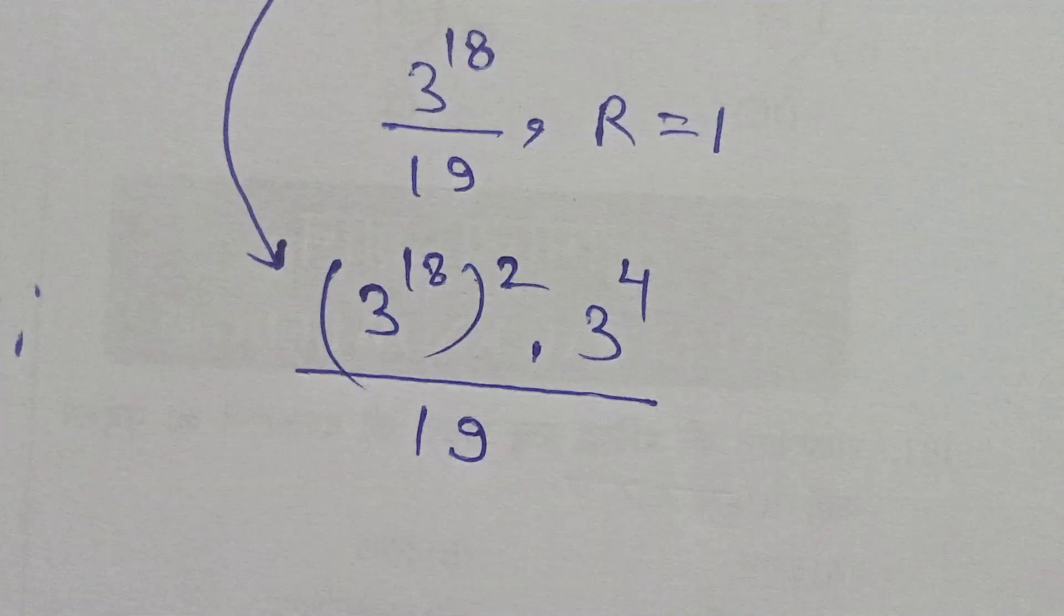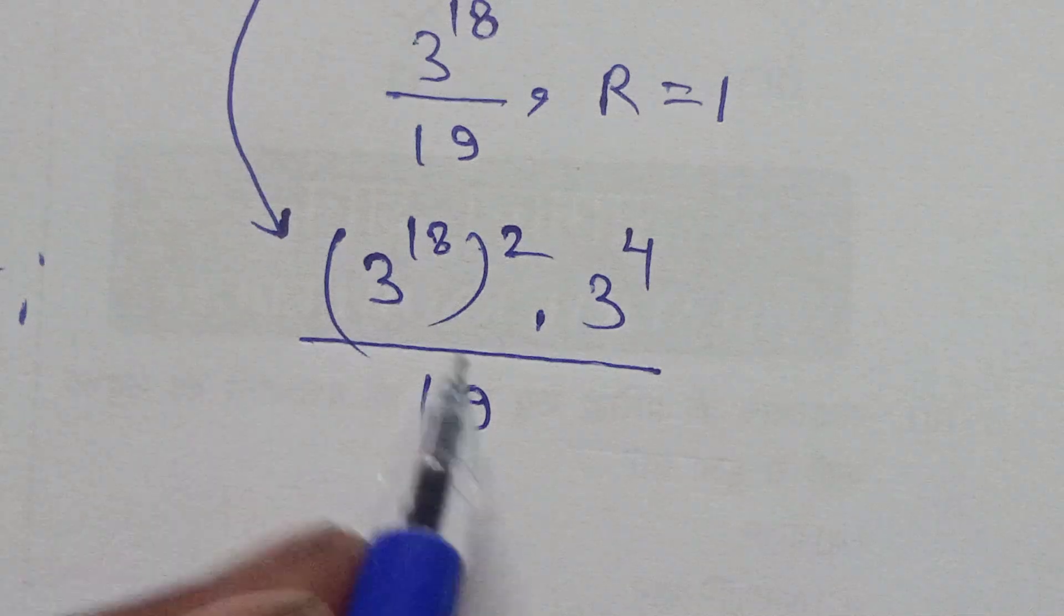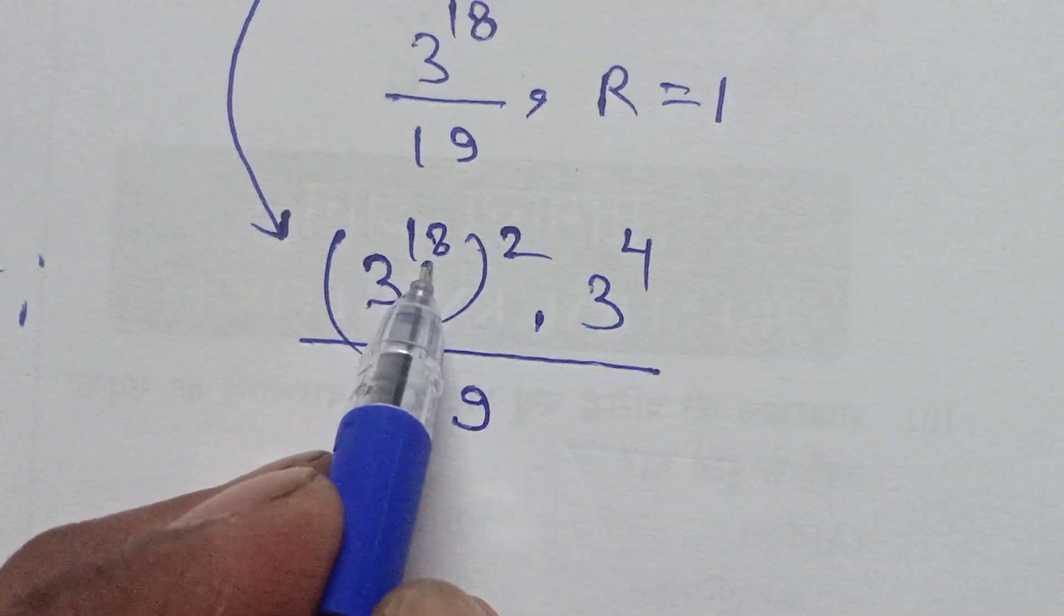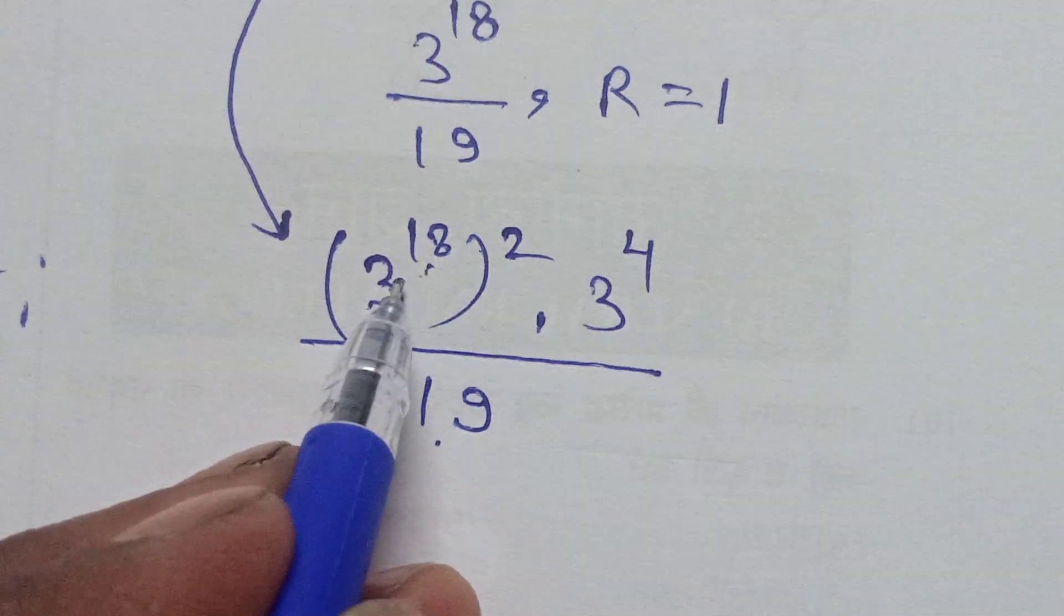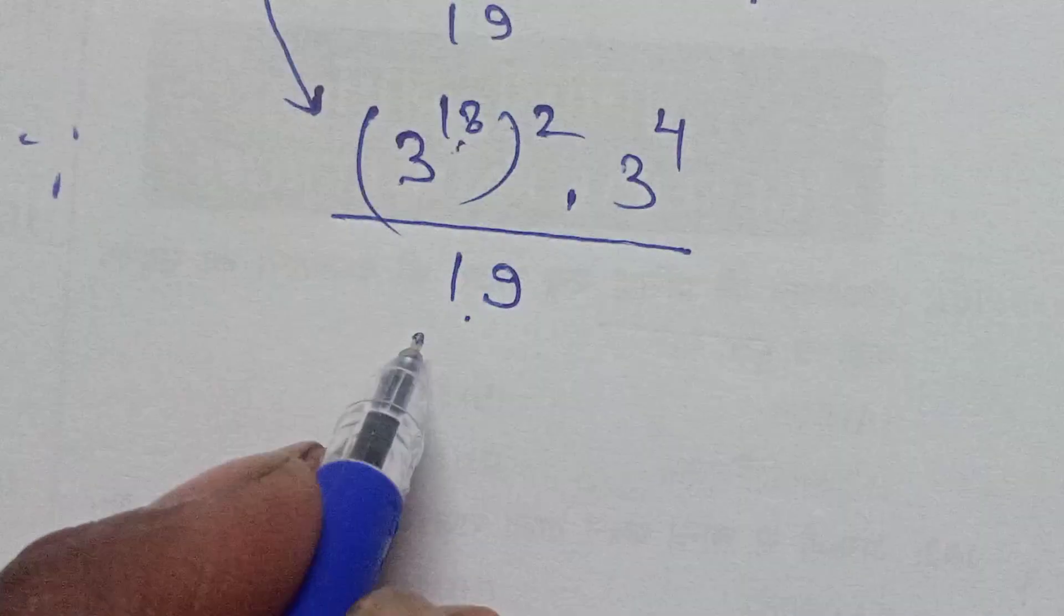Therefore 3 to the power 18 is divided by 19, then remainder will be 1, and 1 square is 1.